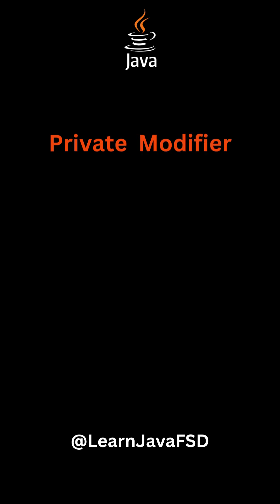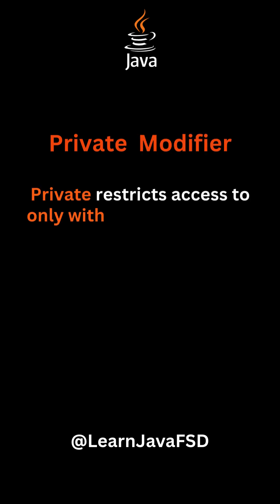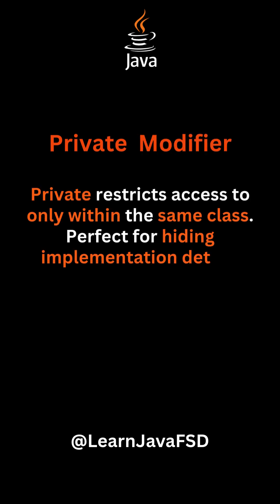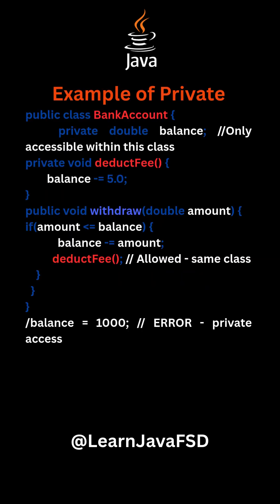Private modifier: private restricts access to only within the same class. Perfect for hiding implementation details and encapsulation. Example of private.